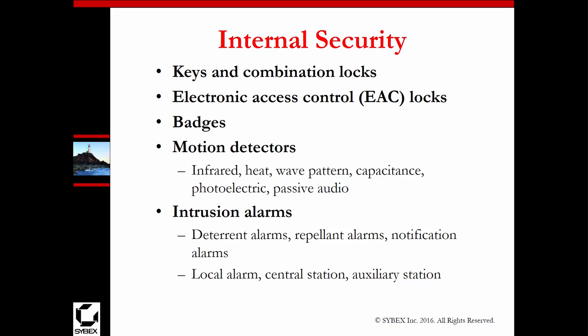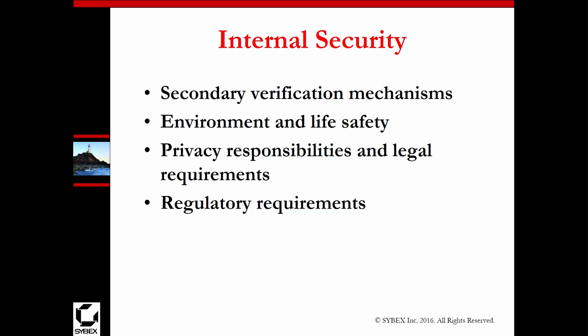For internal security: keys and locks, access control systems, badges, monitoring systems, and intrusion detection — could be an intrusion alarm where you enter an area without swiping your card and an alarm goes off. We may also have multiple verification processes, so instead of showing one ID you have to show two forms of identification. Privacy responsibilities are going to be more based off policies and procedures for the organization. That's a nice quick overview of physical security and some of the things maintained in this area. That's the end of this chapter — if you have any questions or want more depth, please let me know.